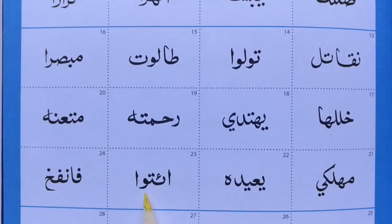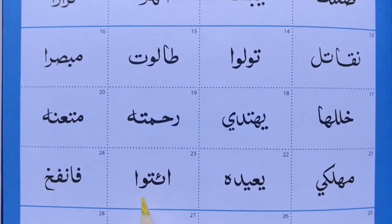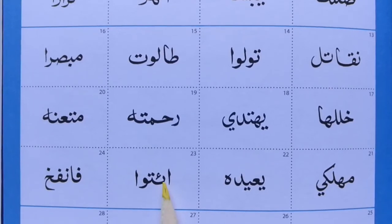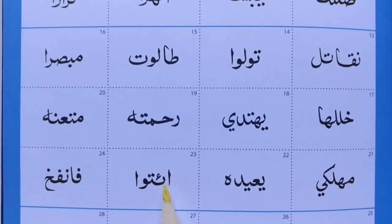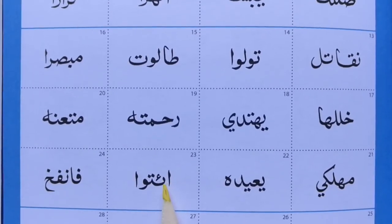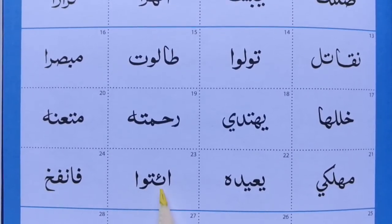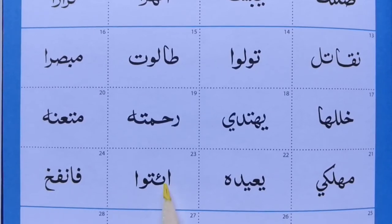Hamza, Ta, Waaw, Alif. So Hamza sometimes sits in this smiley shape that you normally see for a Ba or a Ta or a Tha.